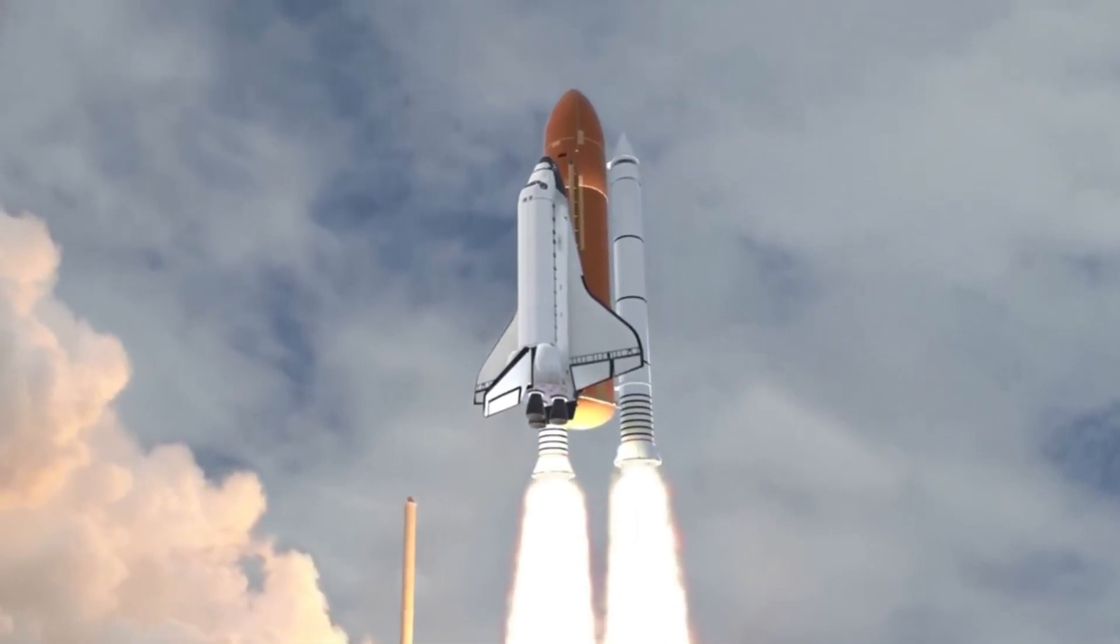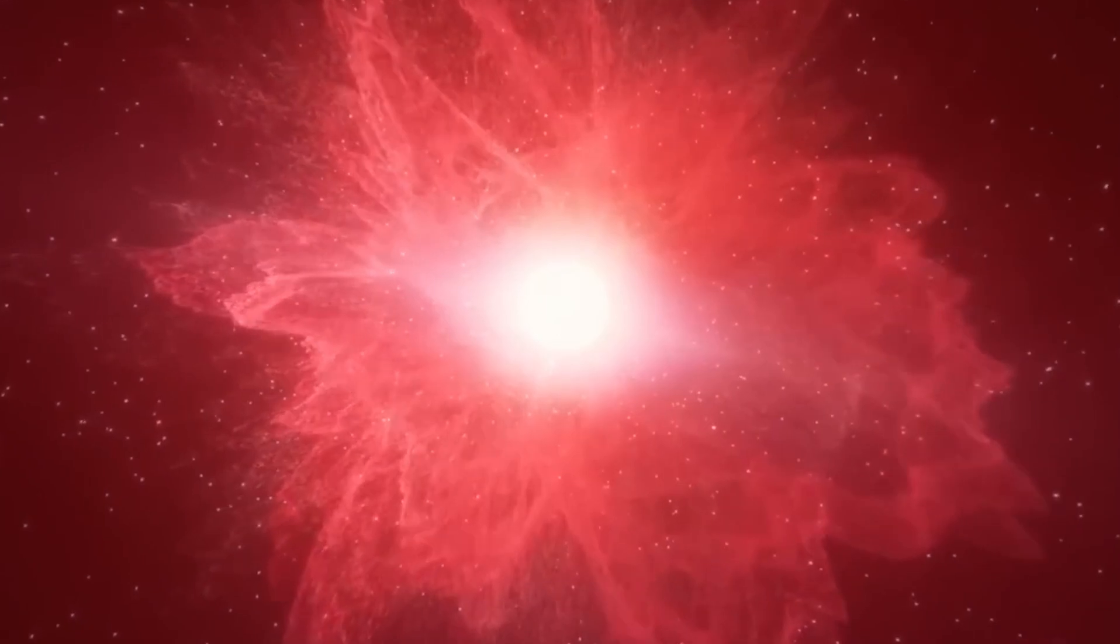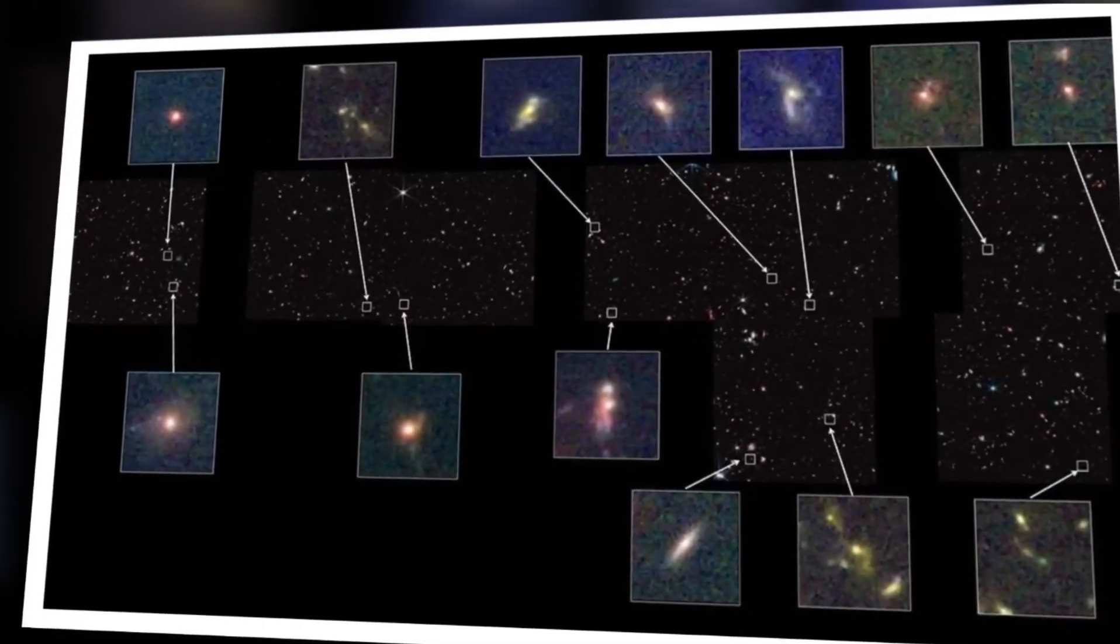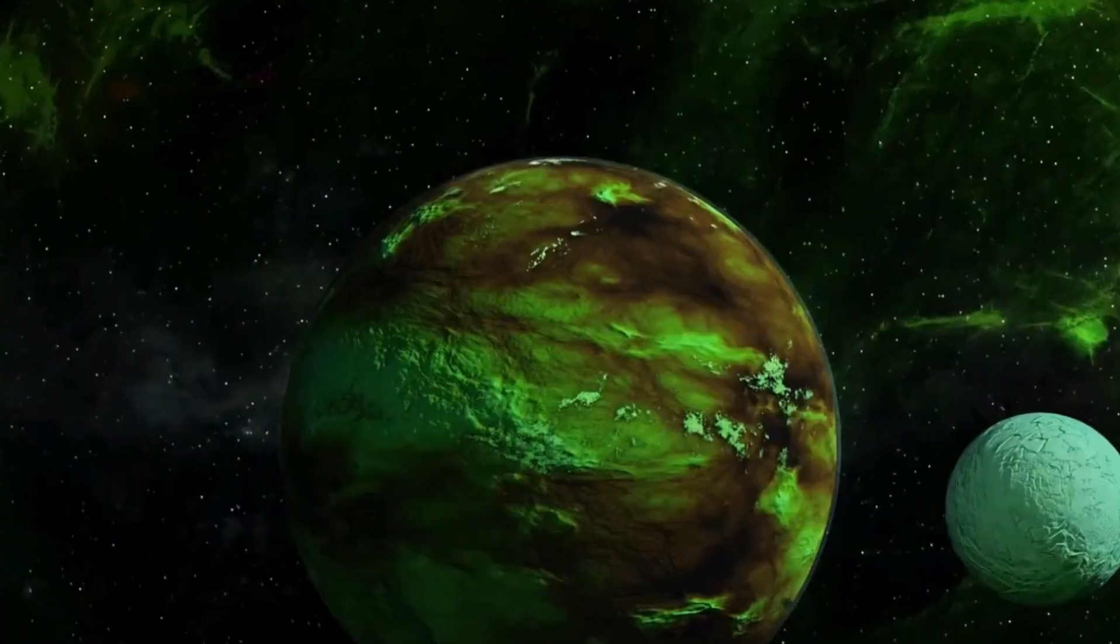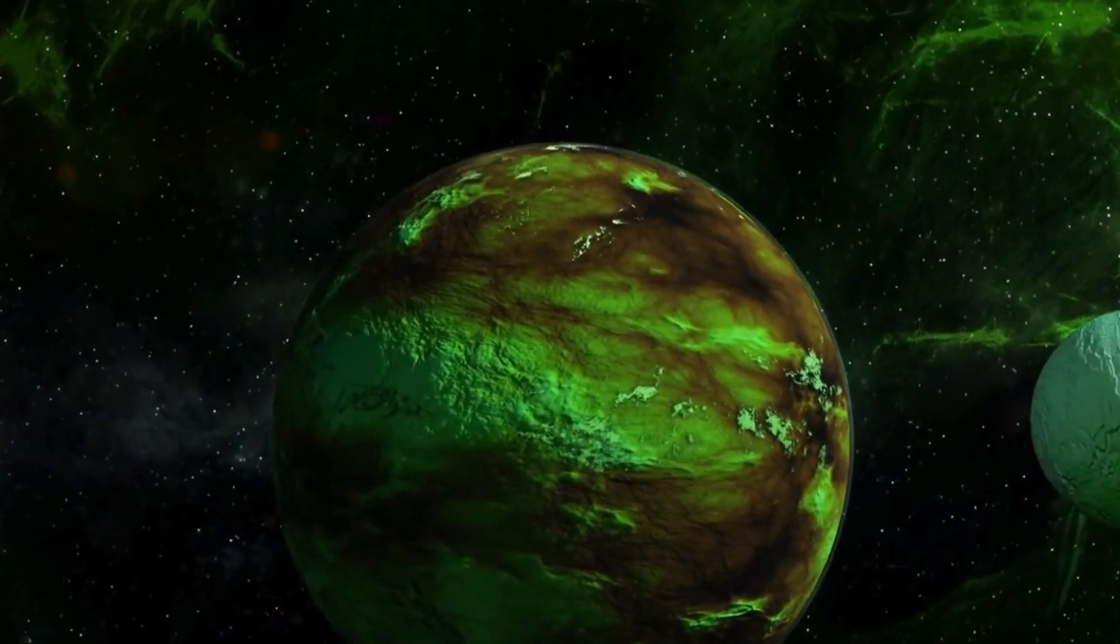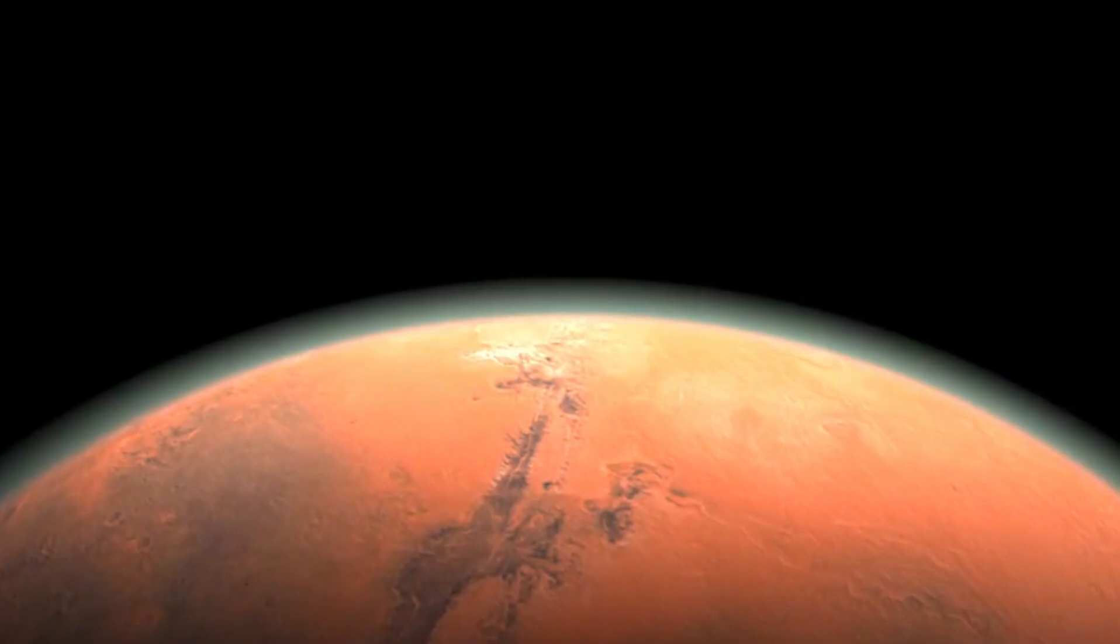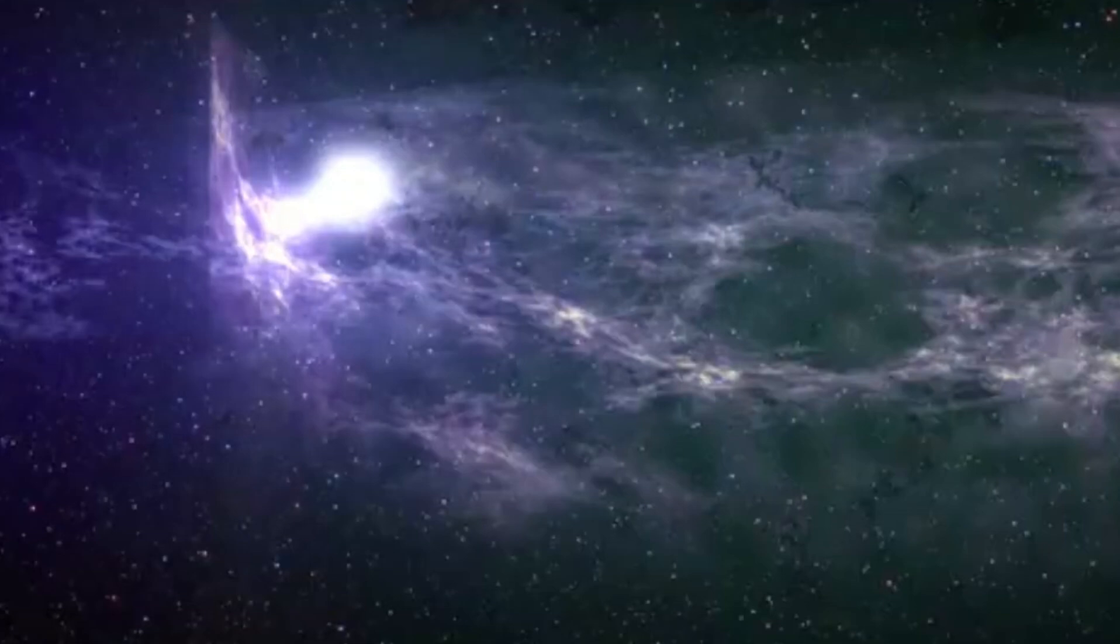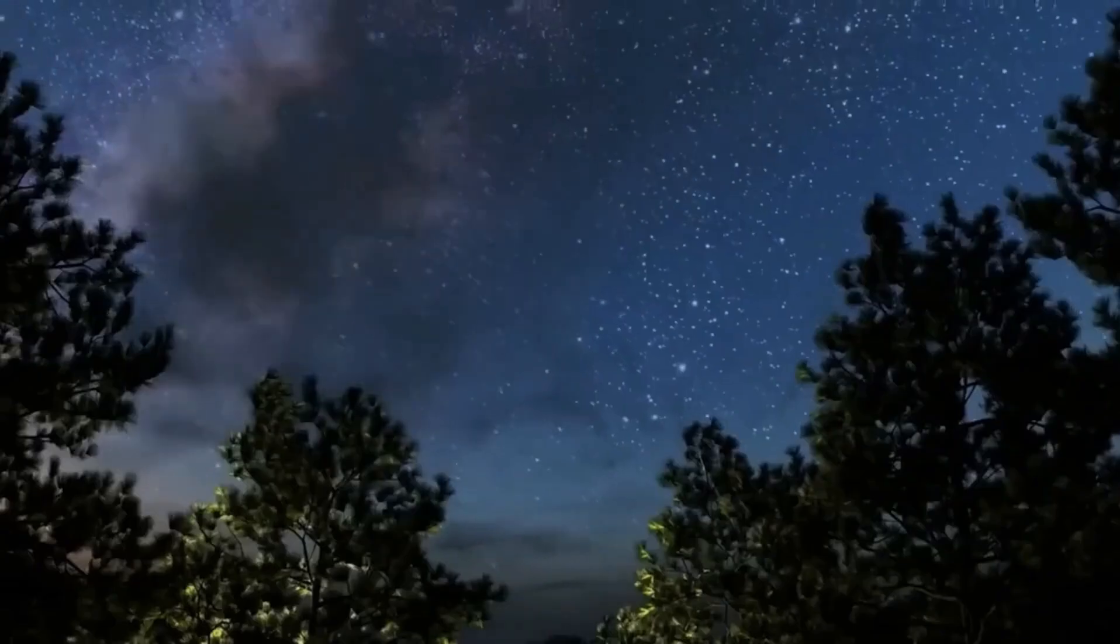Unlike its predecessor, the Hubble Space Telescope, which primarily operated in the visible and ultraviolet spectrum, Webb's infrared capabilities allow it to penetrate cosmic dust and observe celestial objects hidden from optical telescopes. This ability has proven crucial in its observations of the iconic pillars of creation within the Eagle Nebula. Webb's infrared gaze uncovered unprecedented details of these enormous columns of gas and dust, where new stars are born. The telescope's ability to see through the thick nebular material provided astronomers with clearer insights into the processes of stellar birth and evolution.